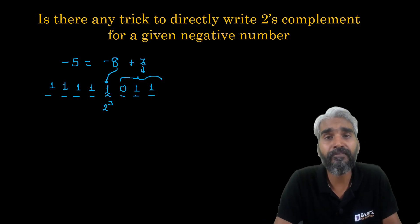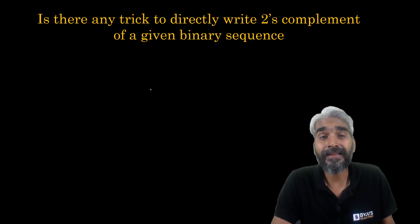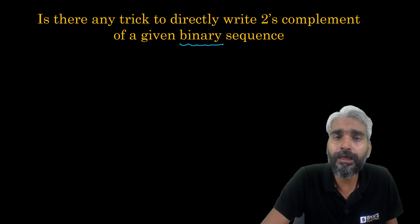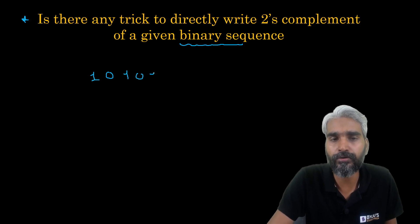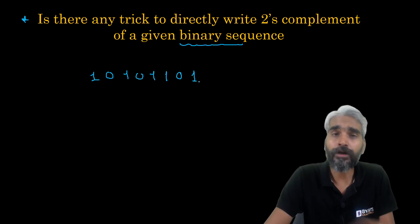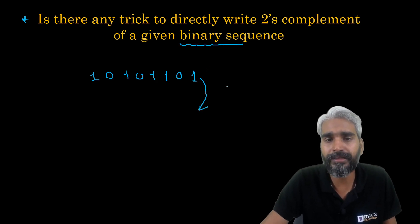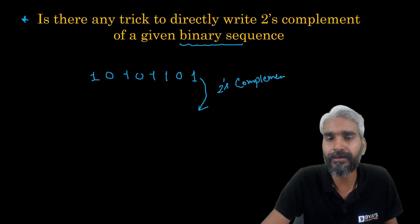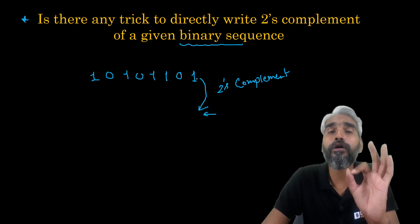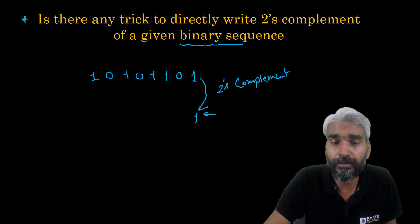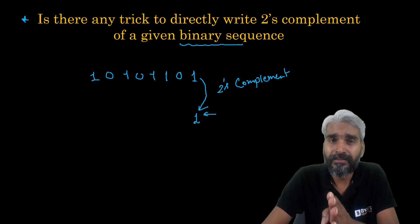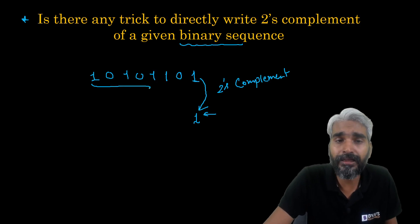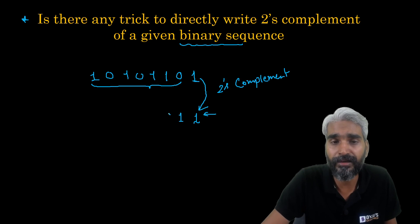Another method: if you already know the binary sequence of a number and just want its two's complement, the method is simple. Take a number like one zero one zero one one zero one. Start from the least significant bit and move left until you observe the first one. Write those bits as they are up to and including that first one, then flip all the remaining bits. So zero becomes one, and the rest flip accordingly.